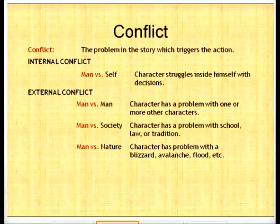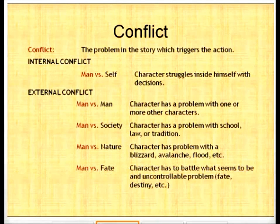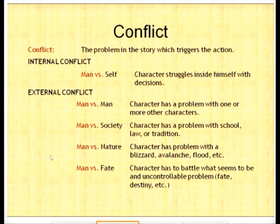The next is man versus nature, where a character has a problem with something in nature: a blizzard, an avalanche, a flood, etc. And then the last is man versus fate. Man versus fate is when a character has to battle what seems to be an uncontrollable problem, whatever their fate or destiny should be. Many of you have seen Final Destination, and that would be an example of man versus fate.